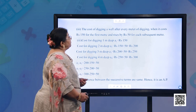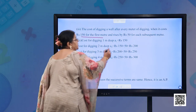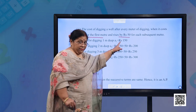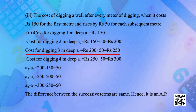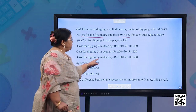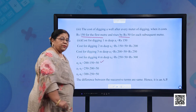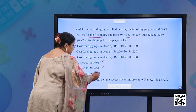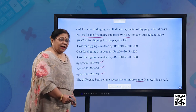The cost of digging a well after every meter, when it costs ₹150 for the first meter and rises by ₹50 for each subsequent meter. A1 = ₹150, A2 = ₹200, A3 = ₹250, A4 = ₹300. A2 − A1 = 50, A3 − A2 = 50, A4 − A3 = 50. The difference between successive terms is the same. Hence, it is an AP.